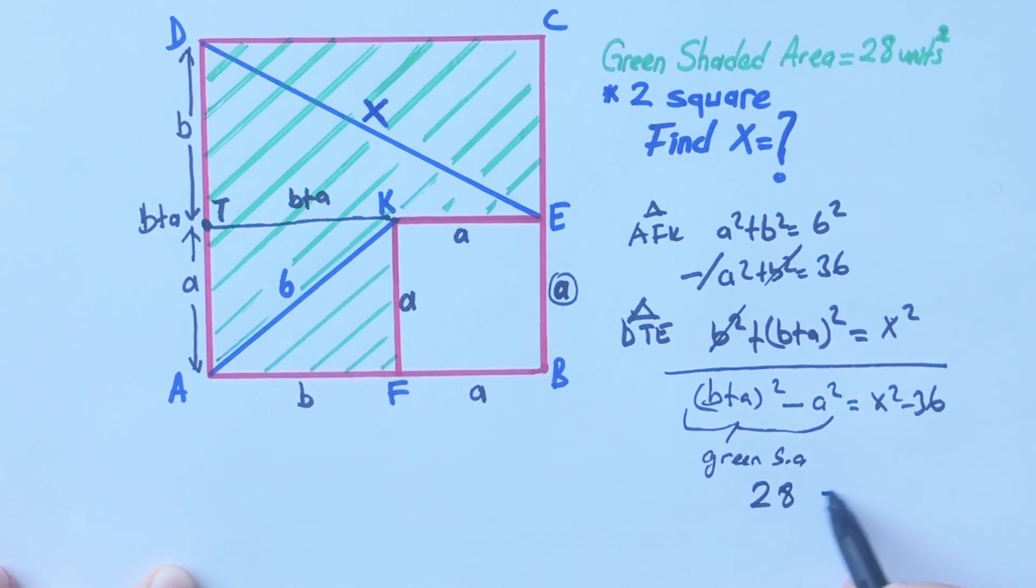Therefore 28 equals x squared minus 36, so 64 equals x squared. Let's square root both sides: x equals 8 units.